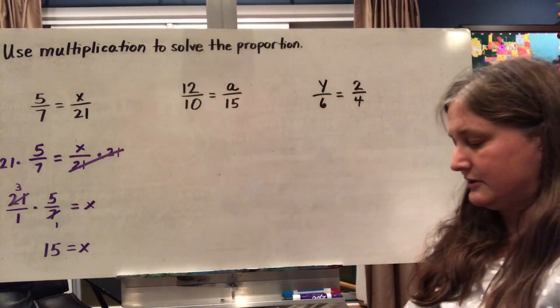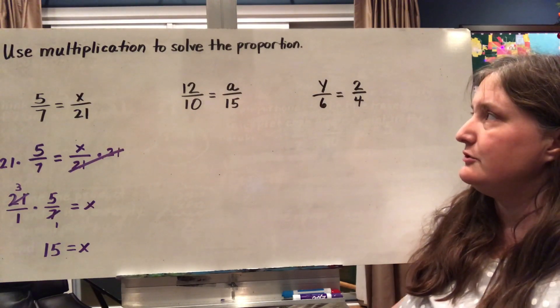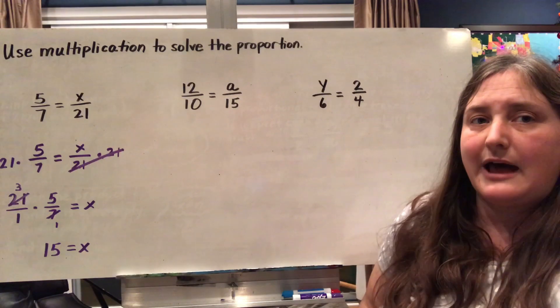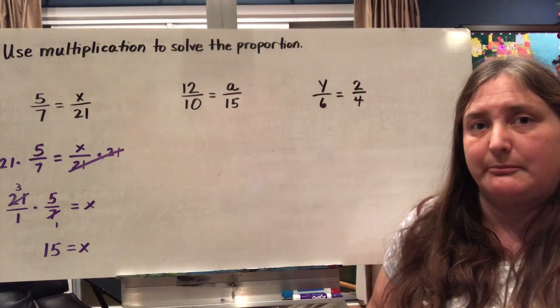So first let's look at using the multiplication property of equality. We want to use multiplication to solve these proportions, and we're allowed to use multiplication as long as we multiply the same number to both sides.